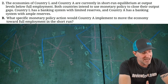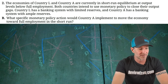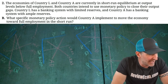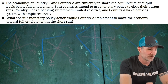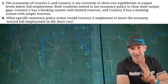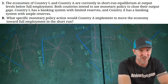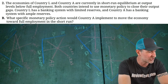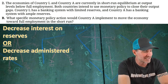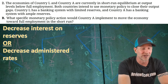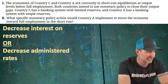For Part B, Country A has ample reserves and is also trying to move back to full employment. With ample reserves, the primary policy tool is interest on reserves. There are two acceptable ways to state the answer: decrease interest on reserves, or decrease administered rates. Either answer should earn the point.